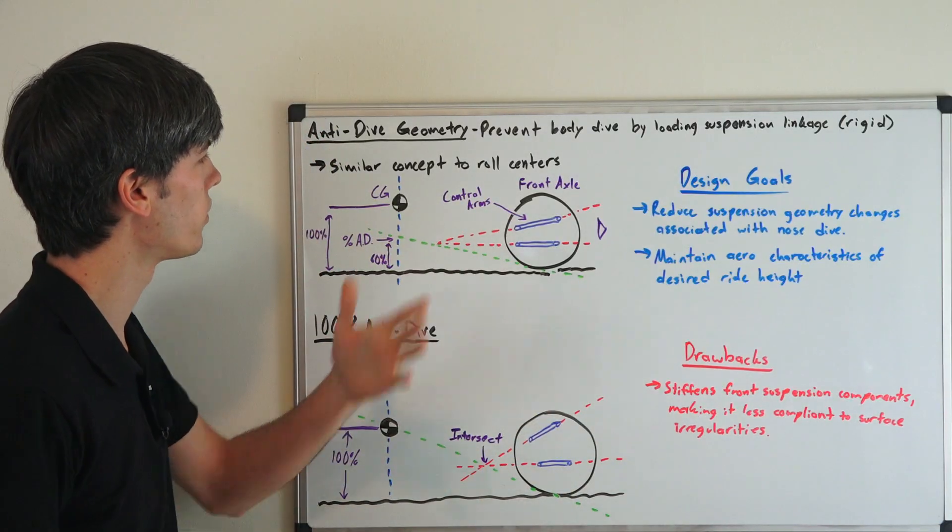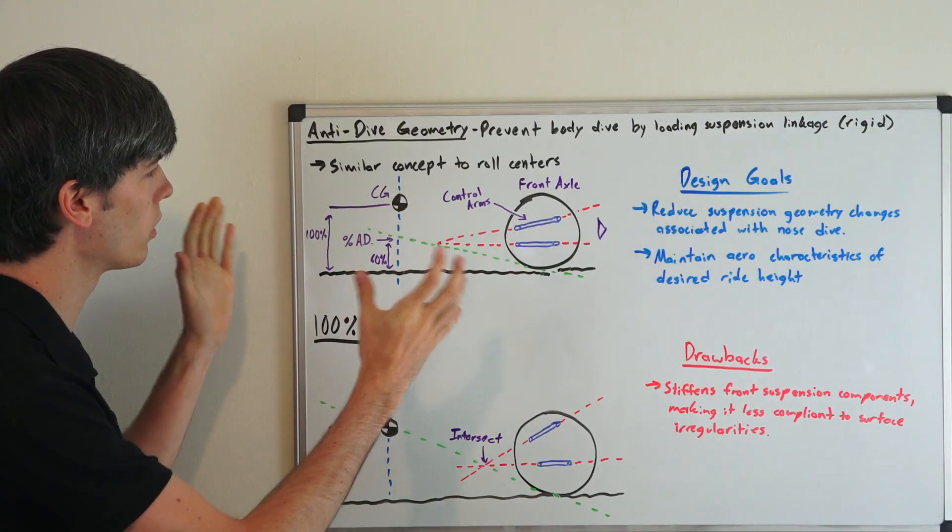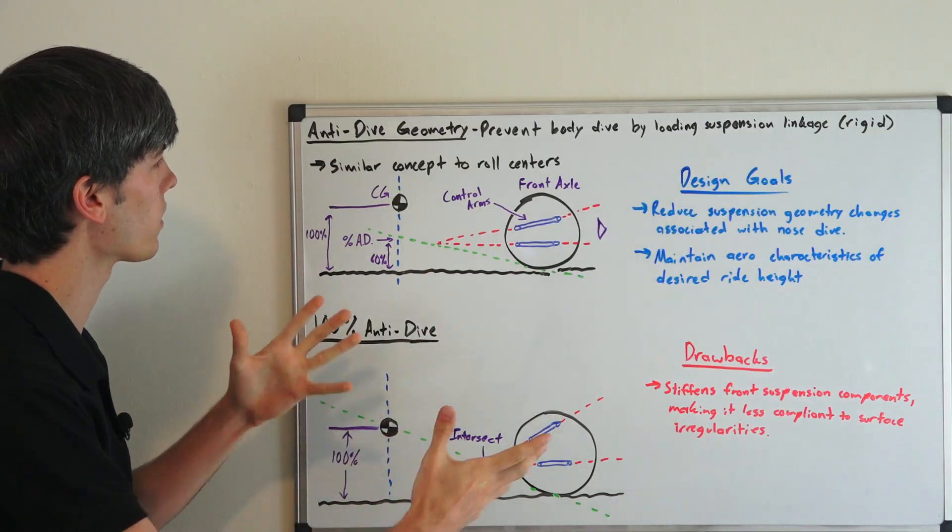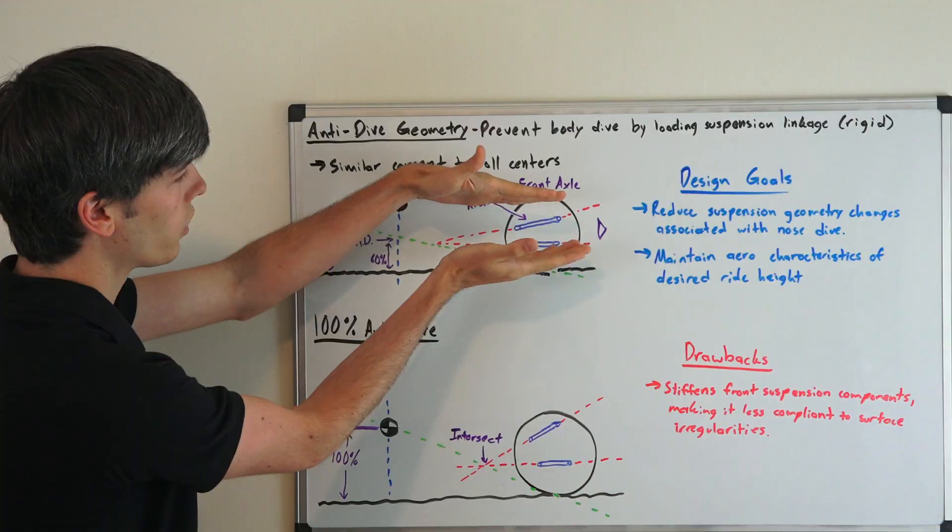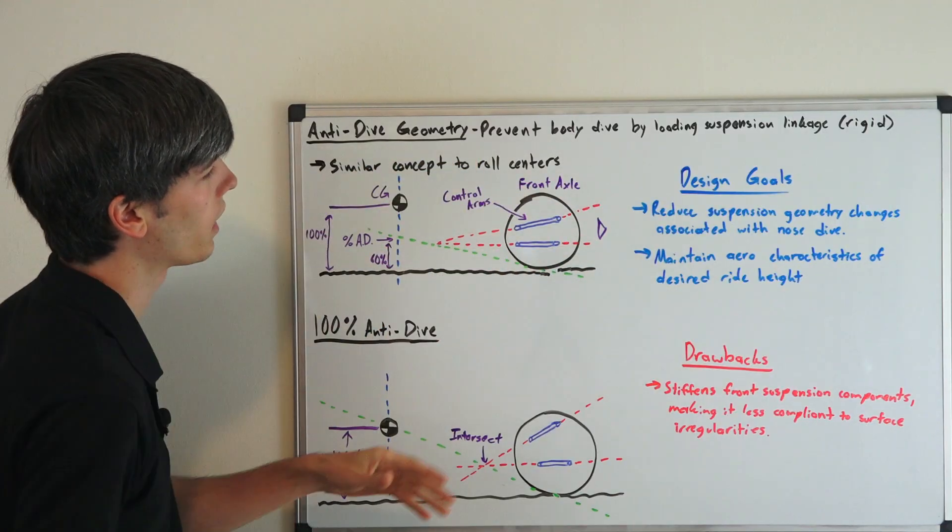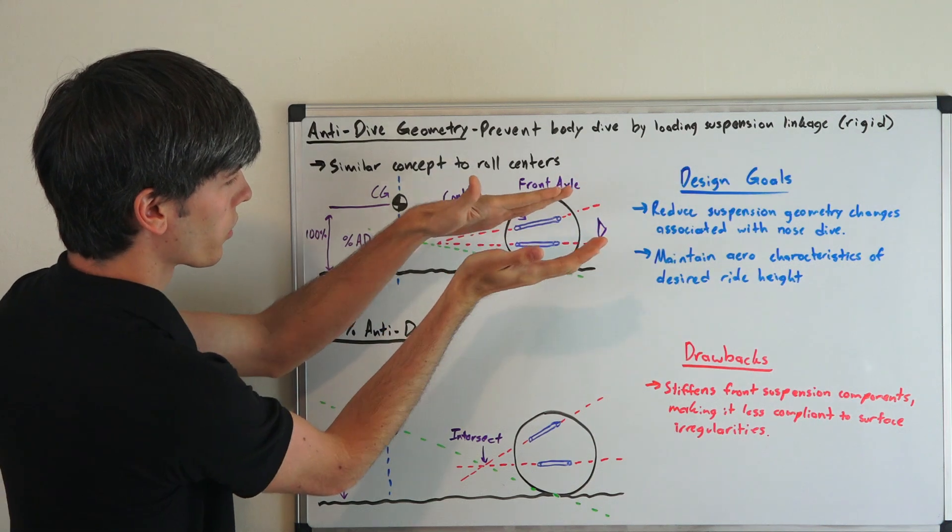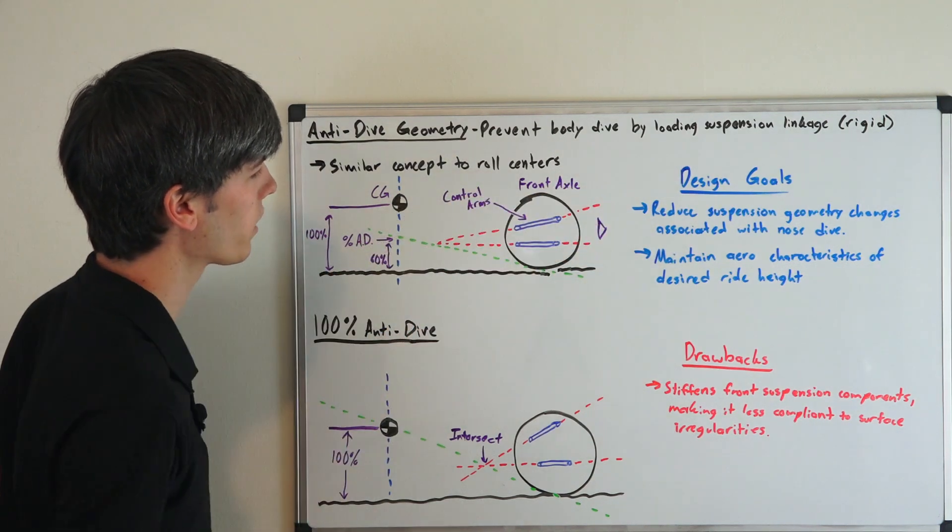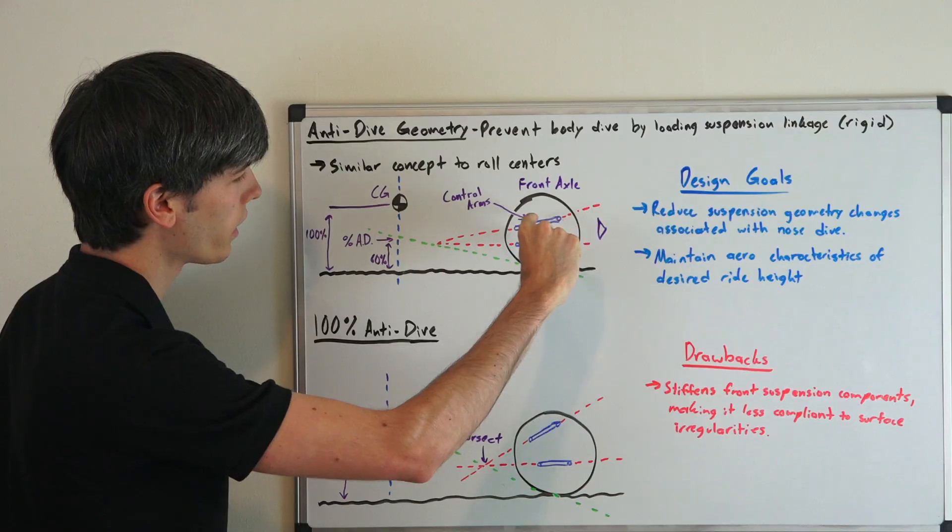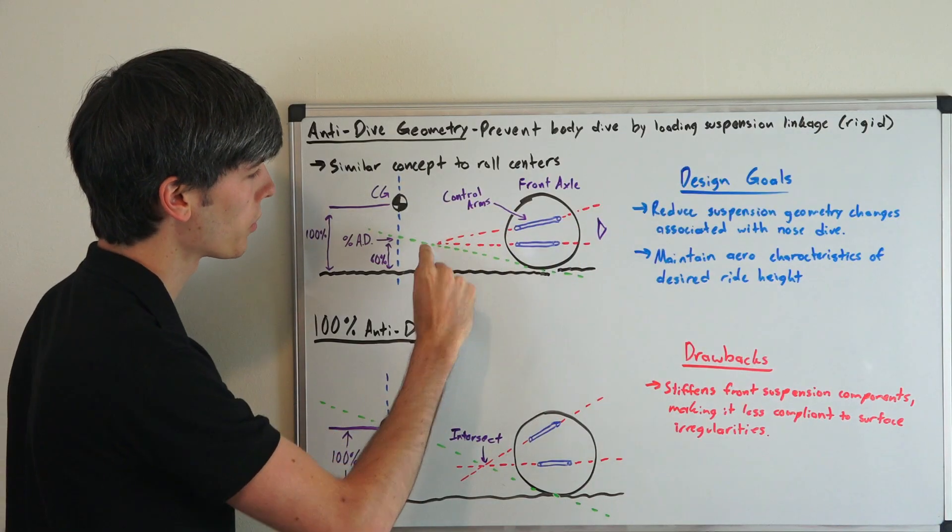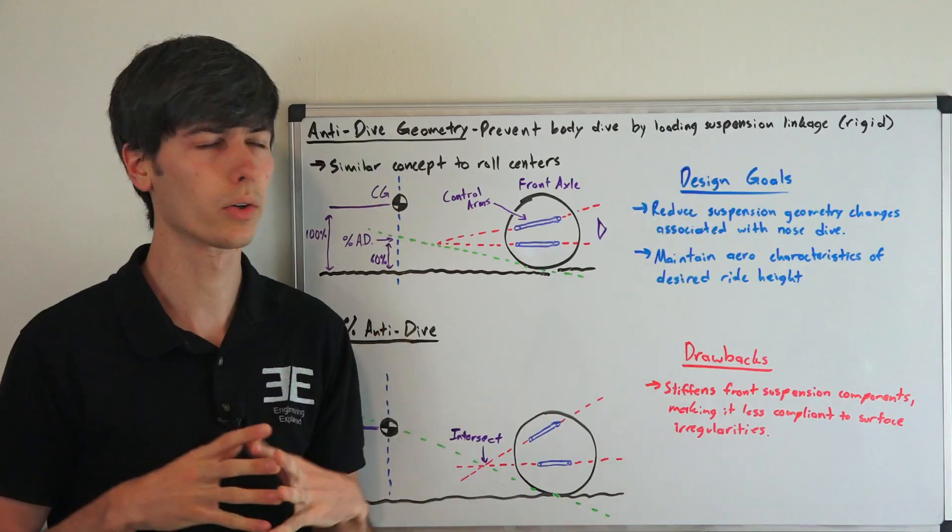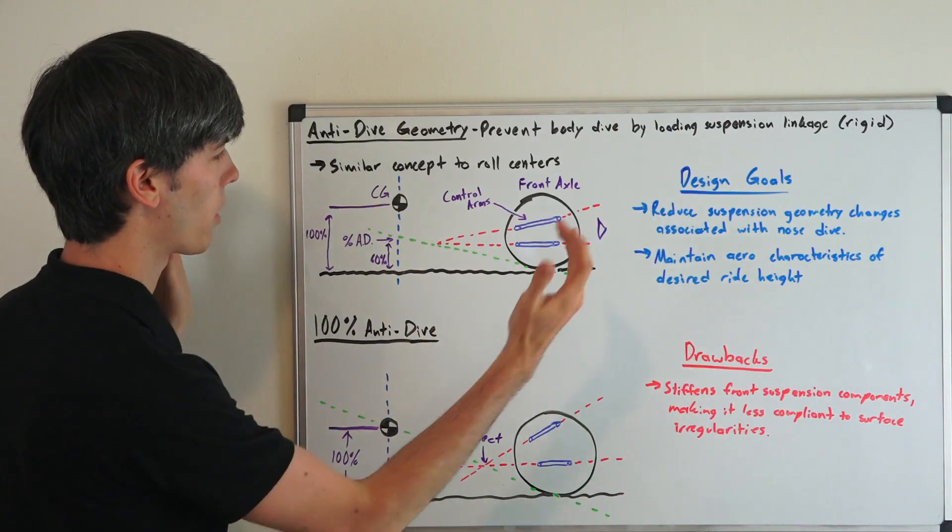Like I mentioned, the idea is very similar to that of roll centers. How you locate anti-dive geometry: basically, instead of having parallel control arms, you're going to have them at an angle. So your suspension links are going to be angled, and you're going to find the intersection point of those control arms. This is just like the instantaneous center when we were looking at roll centers, except now we're looking at the side of the car rather than the front of the car.